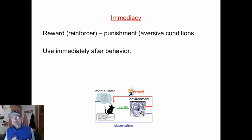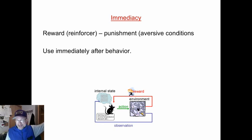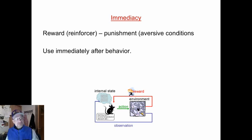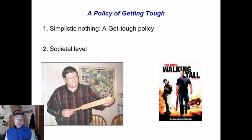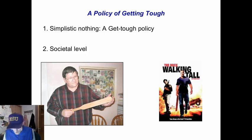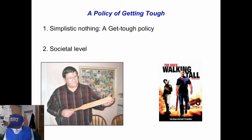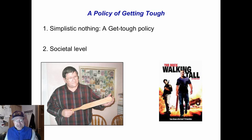In some classrooms they use something like, 'if you get so many things by Friday, you'll get to have a pizza party.' For a young child, a pizza party on Friday is too far removed — you want something immediately following the behavior. A policy of simply getting tough, whether at a classroom level or on a societal level, is not an effective way of controlling behavior. If you think a management system is just a matter of getting tough, you don't understand.